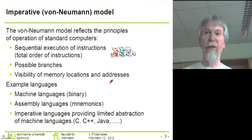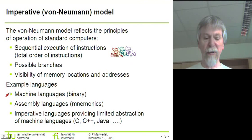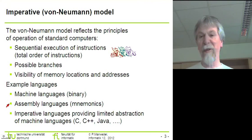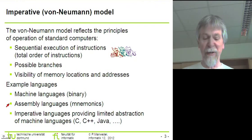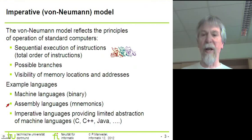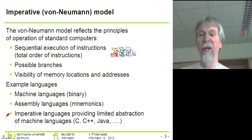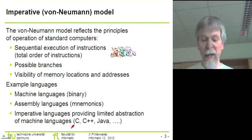Based on the principle of operation of von Neumann computers we can use certain languages. At the lowest level we have machine languages, where the machine is programmed in binary. To raise our level of abstraction we use assembly languages, where certain keywords allow humans to memorize names for the different operations. We can increase abstraction significantly by introducing higher-level languages that provide abstraction of the execution on the machine. These include most languages you know: C, C++, Java, etc.